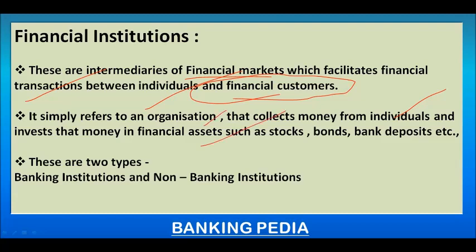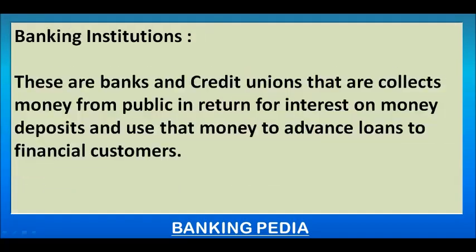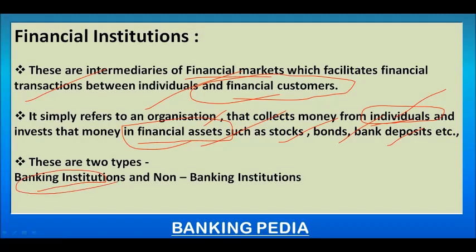Financial institutions are organizations or firms that collect amounts from individuals and invest that money in financial assets such as stocks, bonds, and deposits. They collect amounts from individuals and pay interest back to those individuals. Financial institutions are of two kinds: banking and non-banking. They act as intermediaries in financial markets.